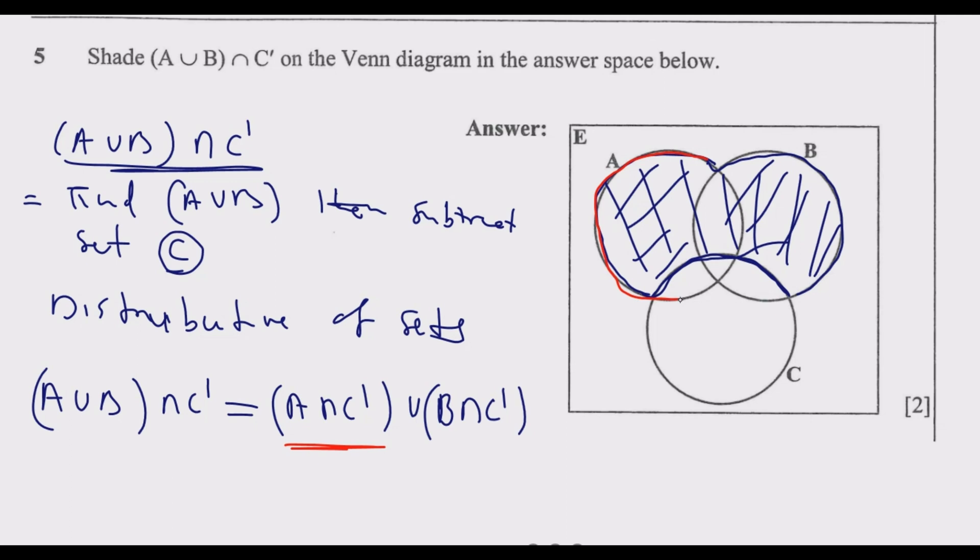Everything which is in C is in this one, so we need to remove that part from A. You need to shade only A alone. When you shade A alone, you discover that this is A alone, up to here.